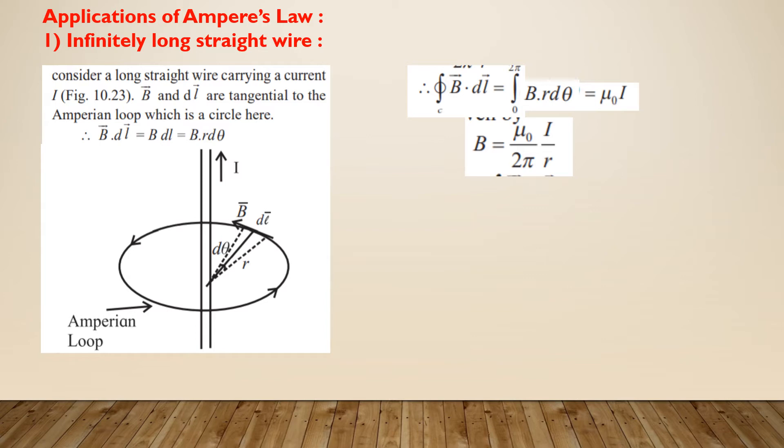Further, the arc length DL is equal to R D theta, where D theta is the angle subtended at the center by the arc length DL. Hence, by Ampere's law,